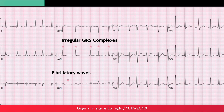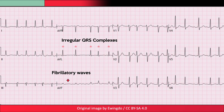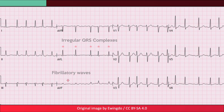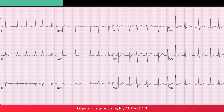These fibrillatory waves can be either fine, less than 1 mm in amplitude, or coarse, greater than 1 mm in amplitude. When they are fine and have a low amplitude, they can appear as a smooth wavy line or even as a flat isoelectric line.